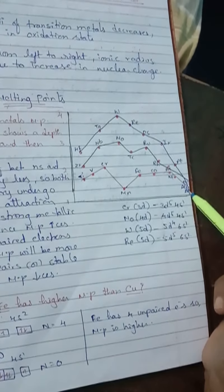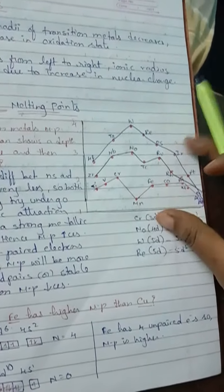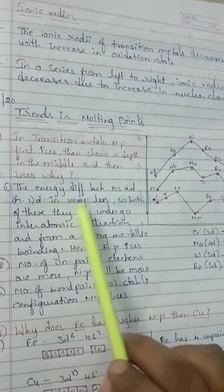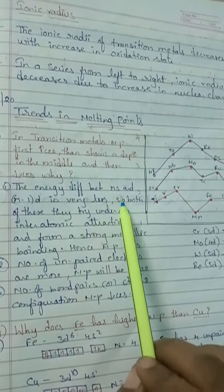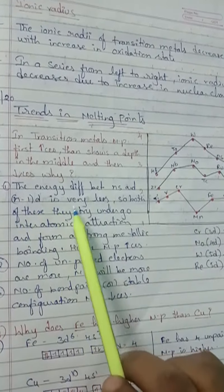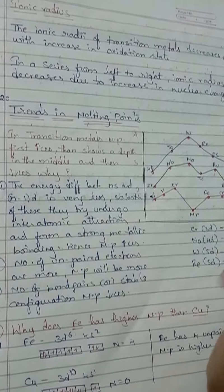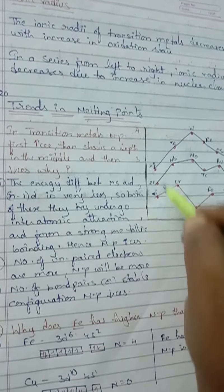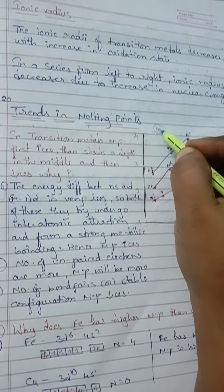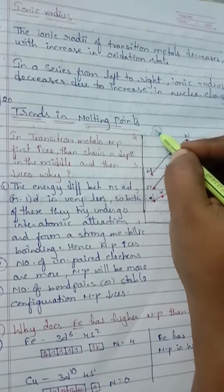This happens because the energy difference between the Ns orbital and N-1d orbital is very less, so both of these try to undergo inter-atomic attraction.